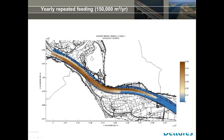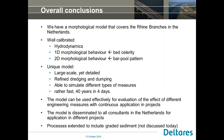Based on this work, we were able to conclude that we have a very good morphological model of the Rhine branches. It is well calibrated — both for hydrodynamics and for morphology, both one-dimensional and two-dimensional. The model can be considered unique because it is large-scale yet detailed to the level of a local bend. It has refined dredging and dumping functionalities. We are able to simulate different types of measures. It is relatively fast — we can run 40 years in roughly four days. It can be used effectively to evaluate measures and give advice to river managers. The model has been disseminated to all interested consultants in the Netherlands to use in different projects. We have also extended the functionalities by adding graded sediment.